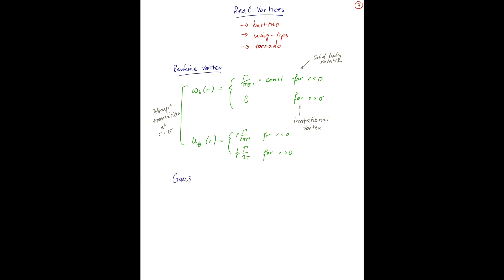The second case that we will consider here is a Gaussian vortex, which has a gradual transition between the irrotational vortex and the solid body rotation. This vortex is typically written as omega z as a function of r is gamma over pi sigma squared e to the minus r squared over sigma squared. And u of theta in this case is gamma over 2 pi r times 1 minus e to the minus r squared over sigma squared.